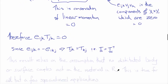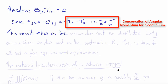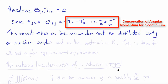This is the same result we obtained more easily before by considering the equilibrium of stresses. This result only relies on the assumption that there are no distributed body or surface couples acting in the material R, which in practice is true for all but a few very specialized applications. So for all practical purposes, conservation of angular momentum requires that the Cauchy stress tensor be symmetric.